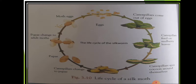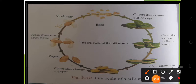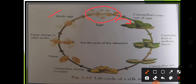Now let us understand the life cycle of the silk moth. First, the female moth lays eggs. After about three to five days, caterpillars come out of the eggs. These caterpillars feed on mulberry leaves.